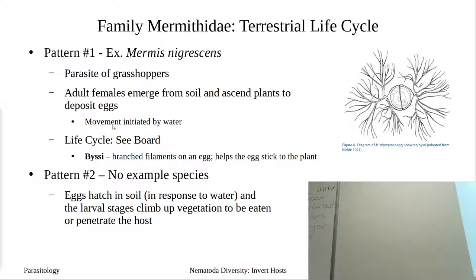Myrmus nigriscens is a parasite of grasshoppers. With this parasite, the adult females are going to emerge from the soil, climb up plants, and then deposit eggs. The eggs have an interesting adaptation — threads called byssi, B-Y-S-S-I — branched filaments on the eggs. These structures basically stick to the plants so that when a grasshopper comes along and feeds on the plant, it increases the chance they'll actually consume them.